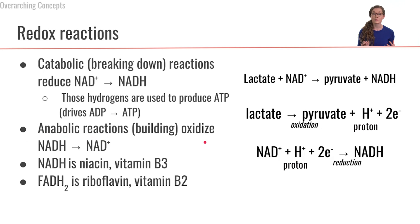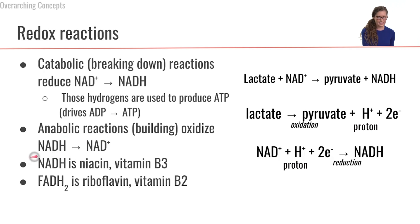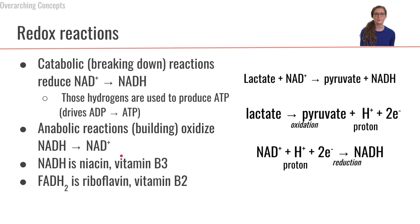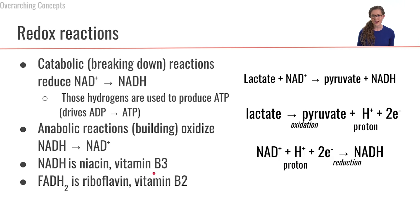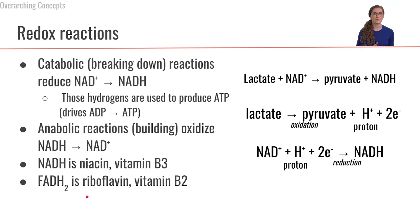Anabolic or building reactions will be oxidizing NADH back to NAD⁺ — NADH is being oxidized, meaning it is donating the electrons, going from NADH to NAD⁺ because it lost the electron. Always follow the hydrogens. As a nutrition-related aside, NAD/NADH is in fact vitamin B3 — it's niacin. Another redox compound used a lot in metabolism is FADH2, which is riboflavin, vitamin B2.